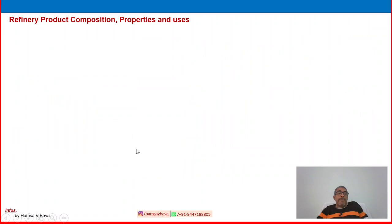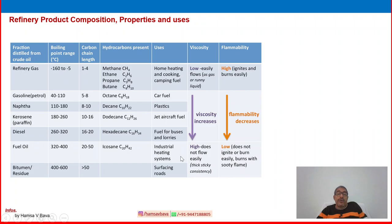Now, refinery product composition — from the refinery, what we are making is also important to know in the overview. In the refinery, gas is produced with a carbon chain length of 1 to 4: CH4, C2H6 — that is C1, C2, C3, and C4. These are methane, ethane, propane, and butane, all coming under the group of gas at normal pressure and temperature. Propane and butane are commercially called LPG — the cooking gas we use in our kitchen.